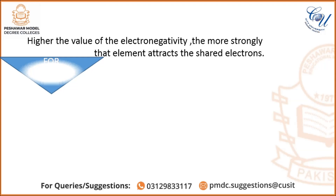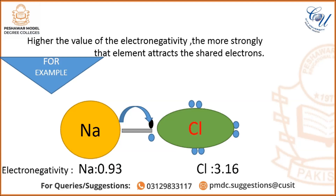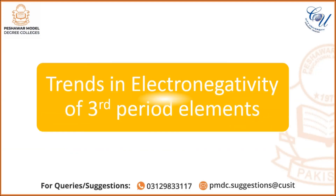For example, consider the molecule sodium chloride. It is ionically bonded. As you can see on the slide, an electron has been transferred from sodium to chlorine. Sodium has an electronegativity of 0.93 and chlorine has 3.16. Chlorine is more electronegative than sodium, so chlorine attracted the shared pair of electrons toward itself, causing sodium to become positively charged and chlorine to become negatively charged.